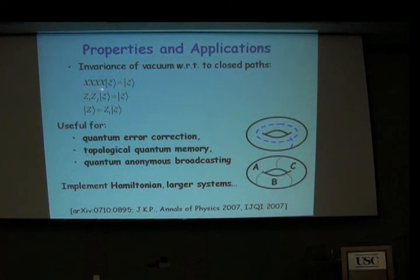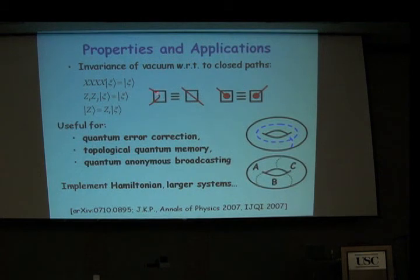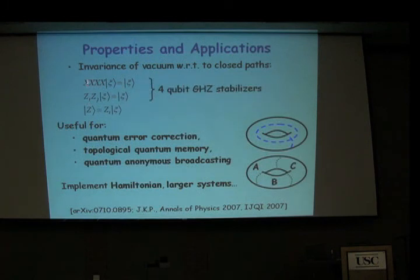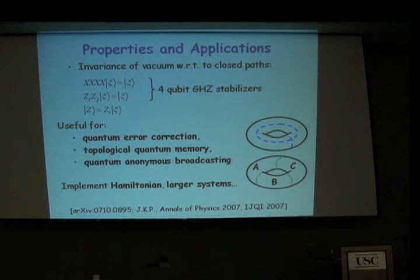To summarize: four X's acting on the vacuum gives you the vacuum. Two Z's acting on the vacuum gives you the vacuum — like a string passing through or across. Z operators acting on the vacuum give you excitations, all giving exactly the same state regardless of where you make the rotation. These two properties are the four-qubit GHZ stabilizers, which uniquely define that this has to be a GHZ state.